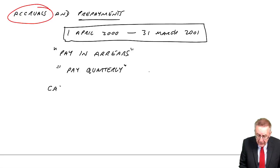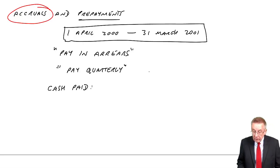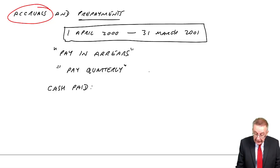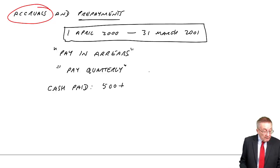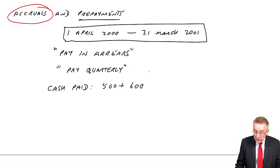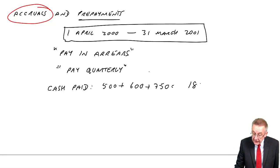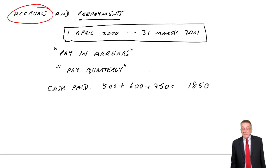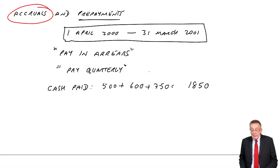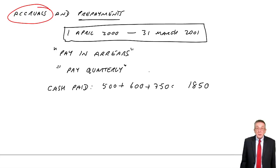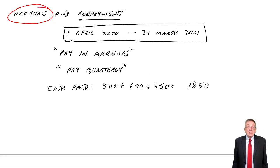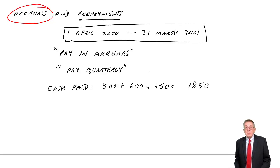First, what was the cash paid during the year between April and March? In July he paid 500; in October he paid 600; in January, 750. So the total cash paid is 1850. Now that's all he's paid, but of course he's only paid up to the end of December 2000. His year goes to March, so he's still owing for three months. The total expense requires us to add on those three months.